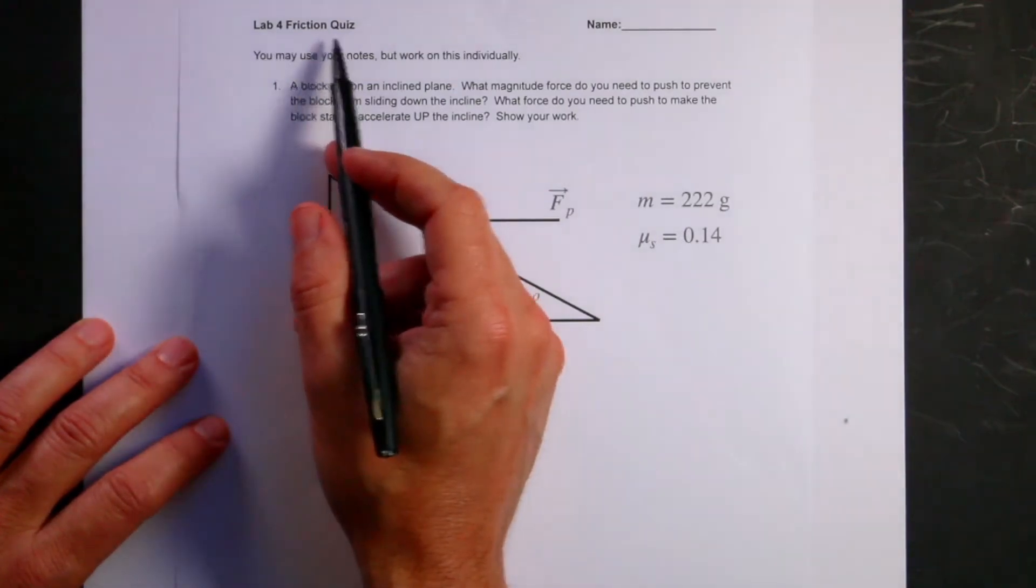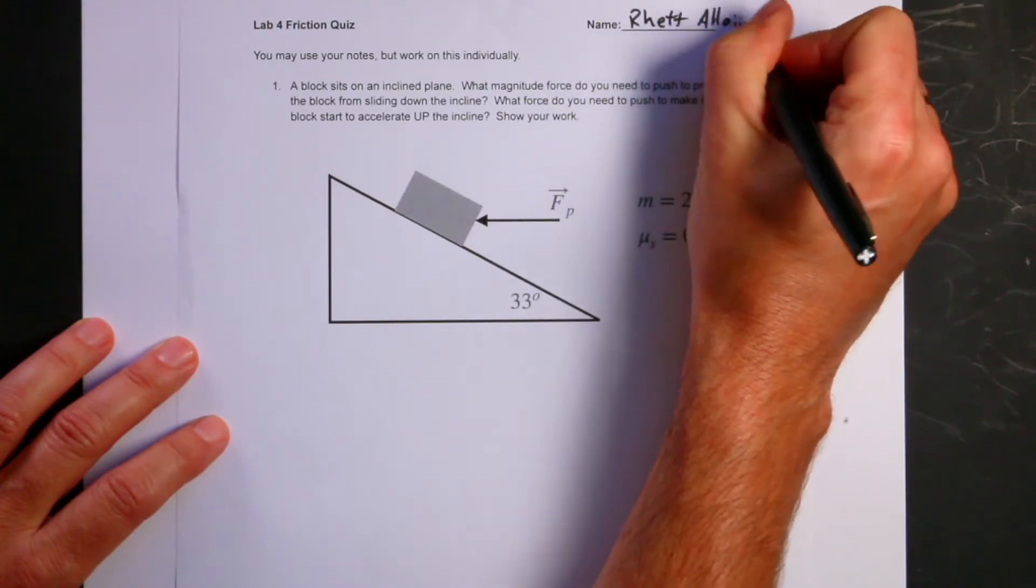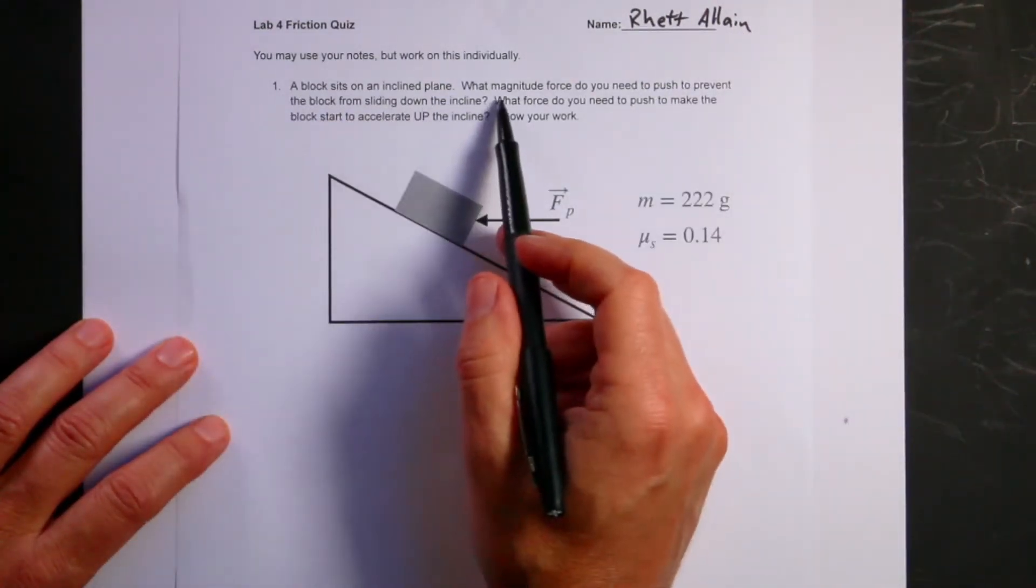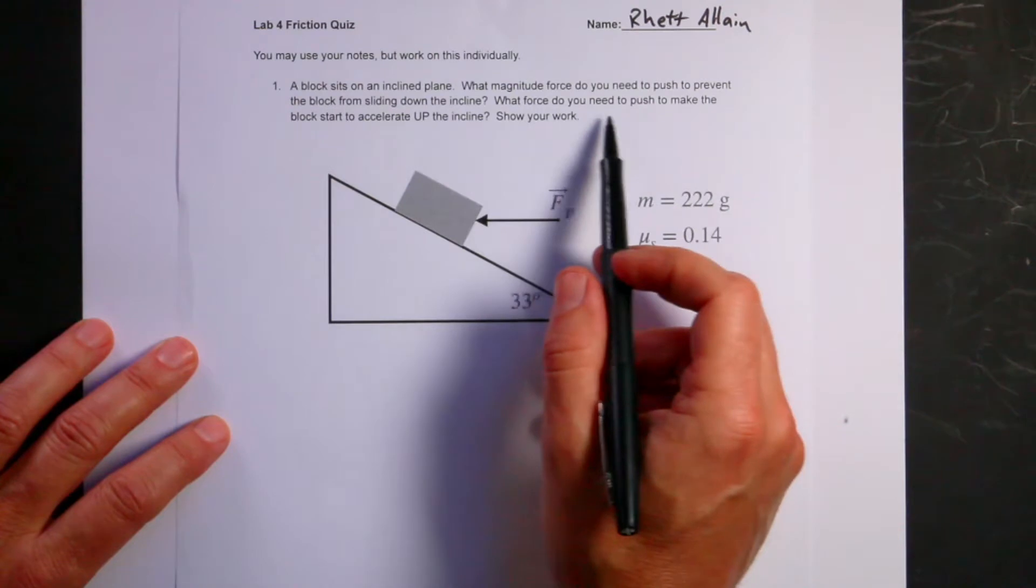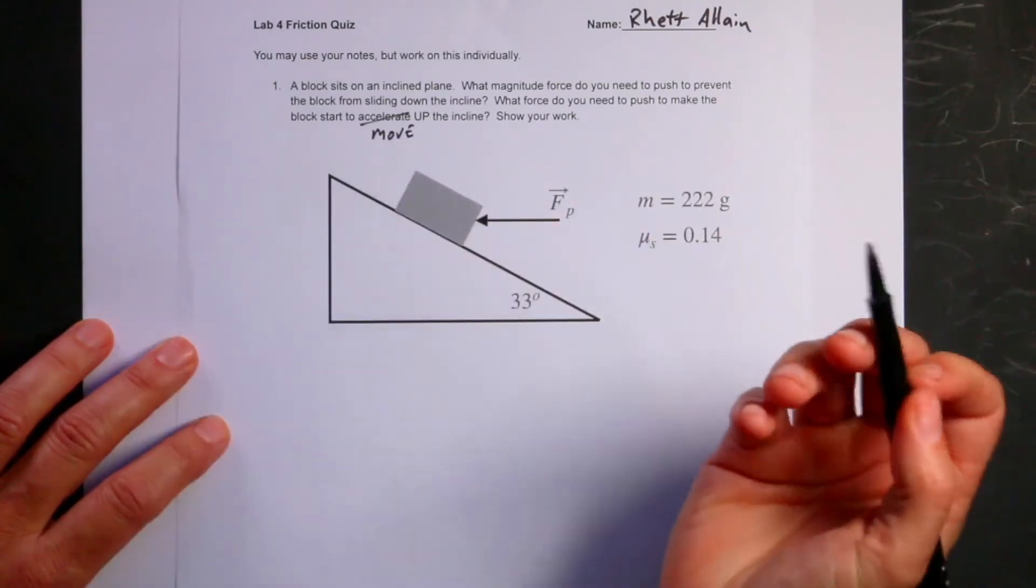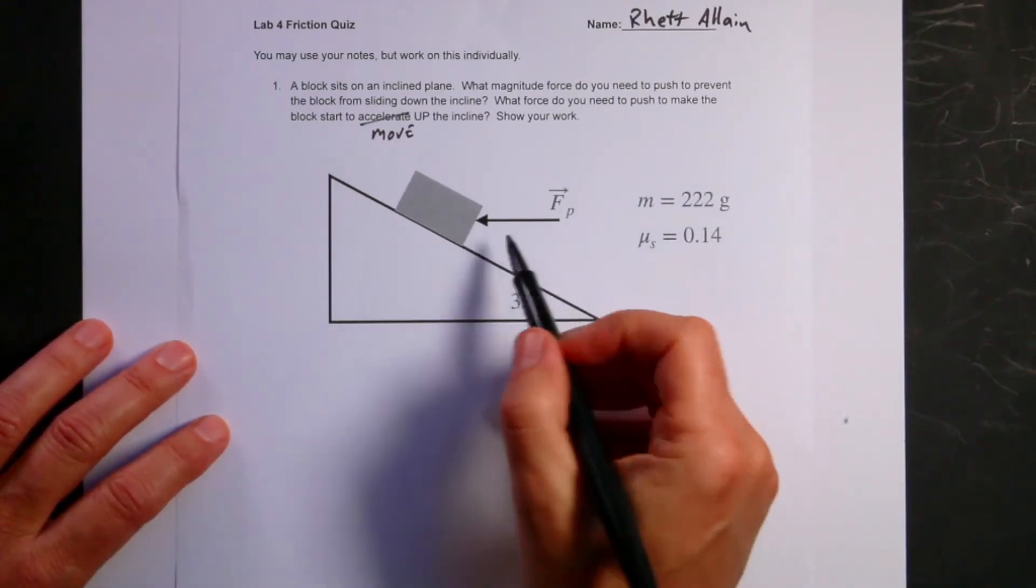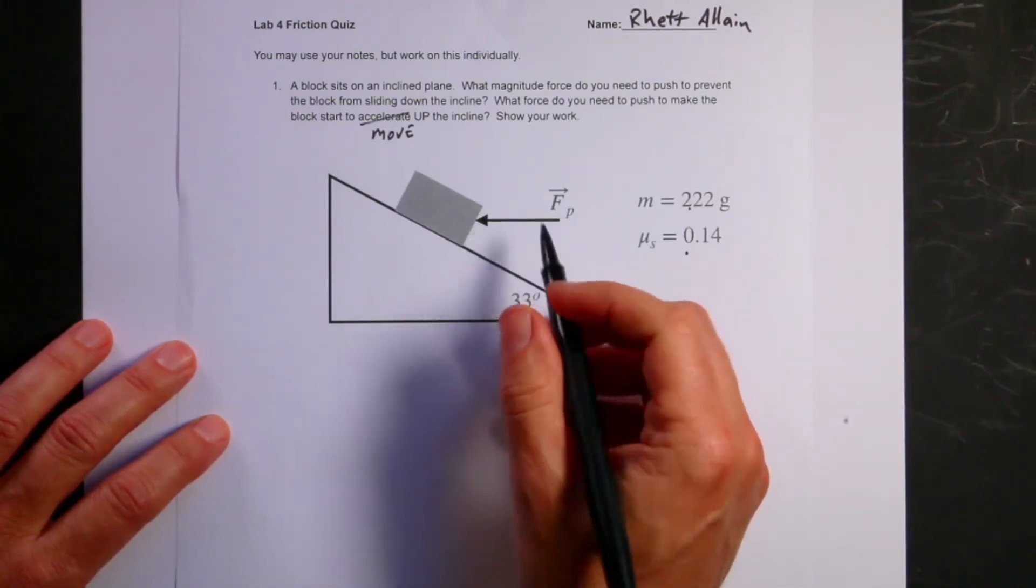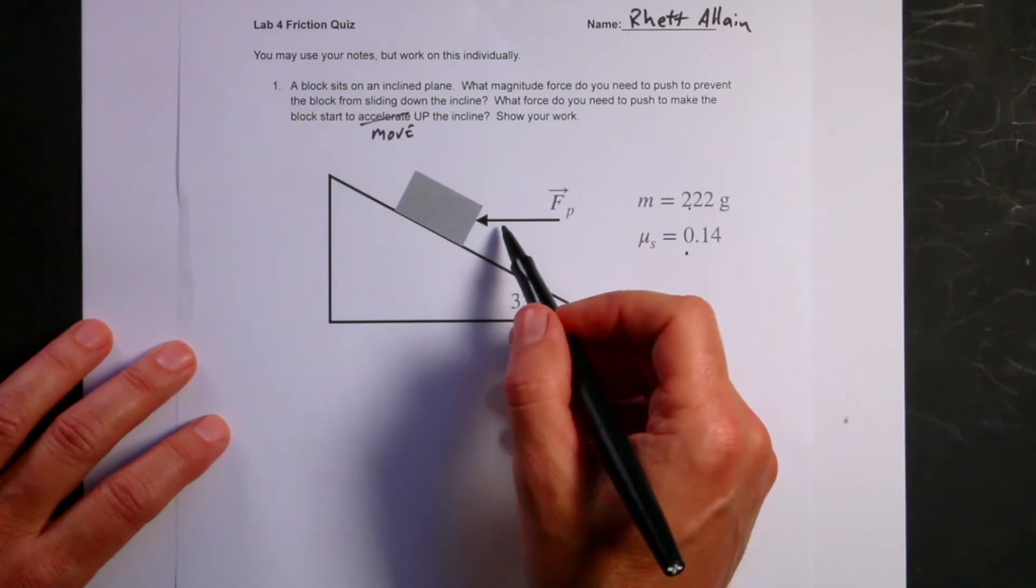Lab 4 Friction Quiz. Name, I should put my name here, Rhett Elaine. So a block sits on an inclined plane. What magnitude force do you need to push to prevent the block from sliding down the incline? What force do you need to push it to make it start to move up the incline? So I give the mass of the block, the coefficient of static friction, the angle, and here you're pushing this horizontally.